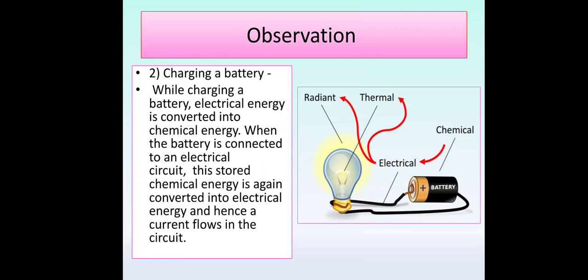Second event: charging a battery. While charging a battery, electrical energy is converted into chemical energy. When the battery is connected to an electrical circuit, this stored chemical energy is again converted into electrical energy, and hence the current flows in the circuit.